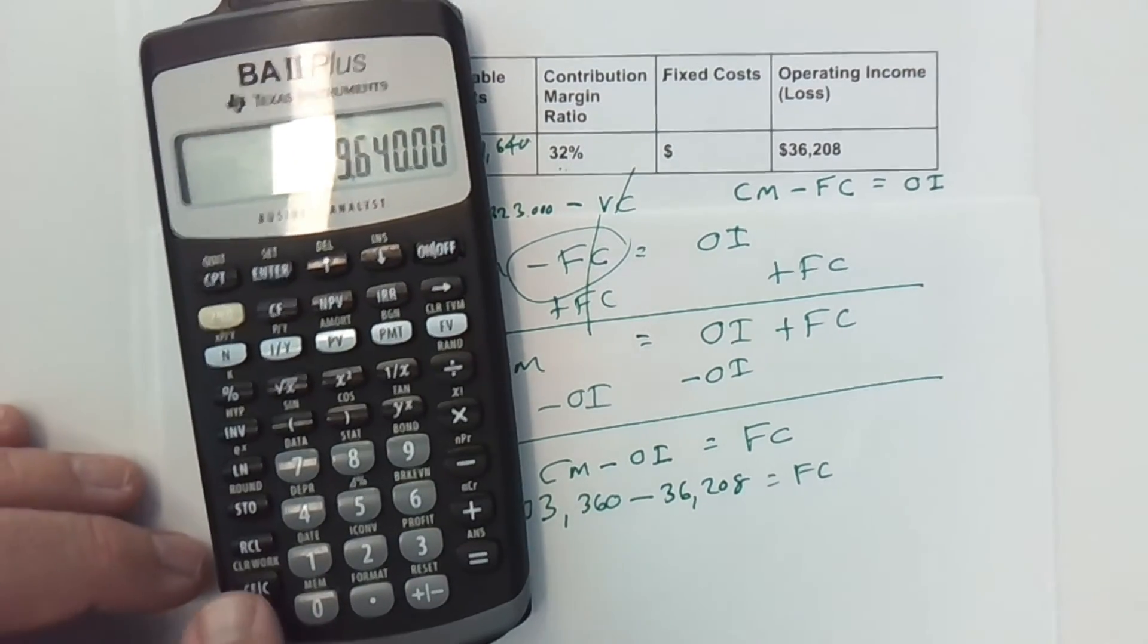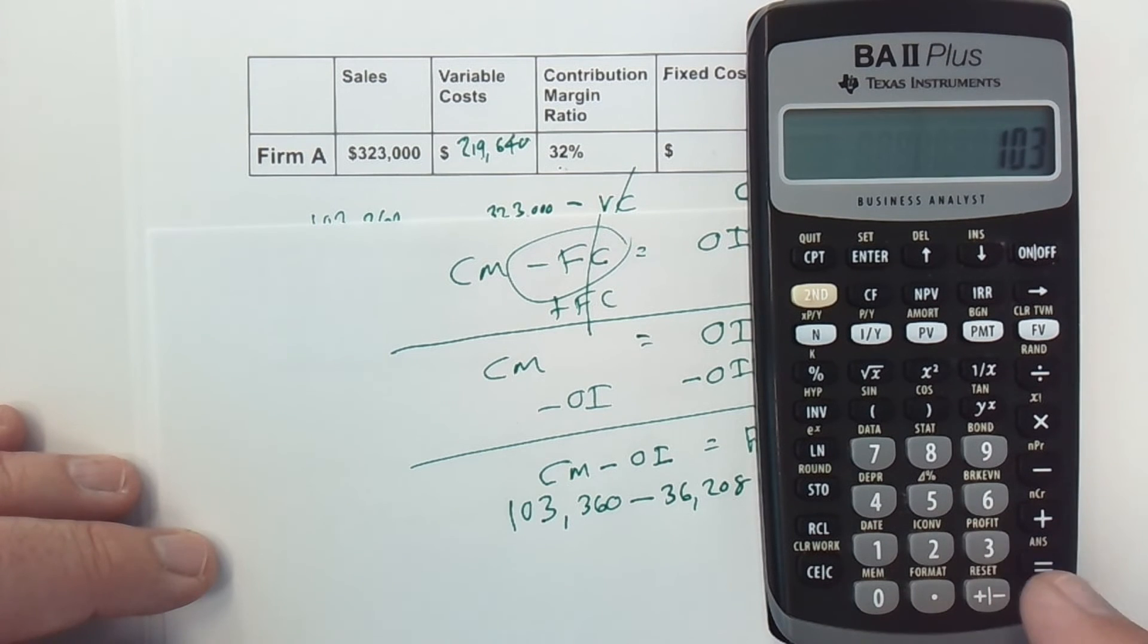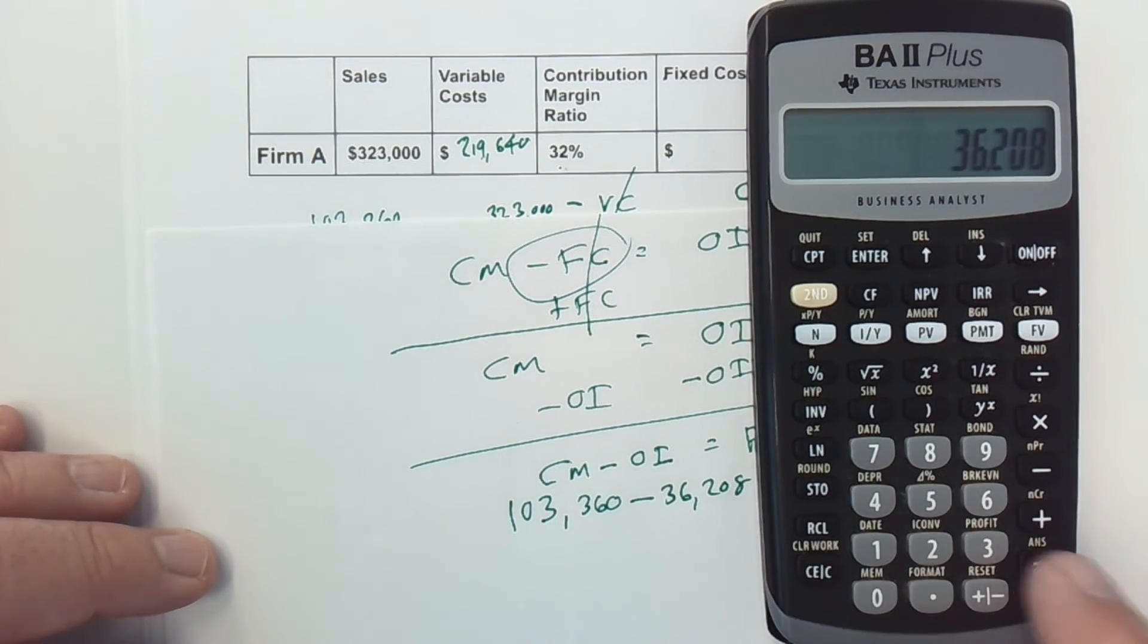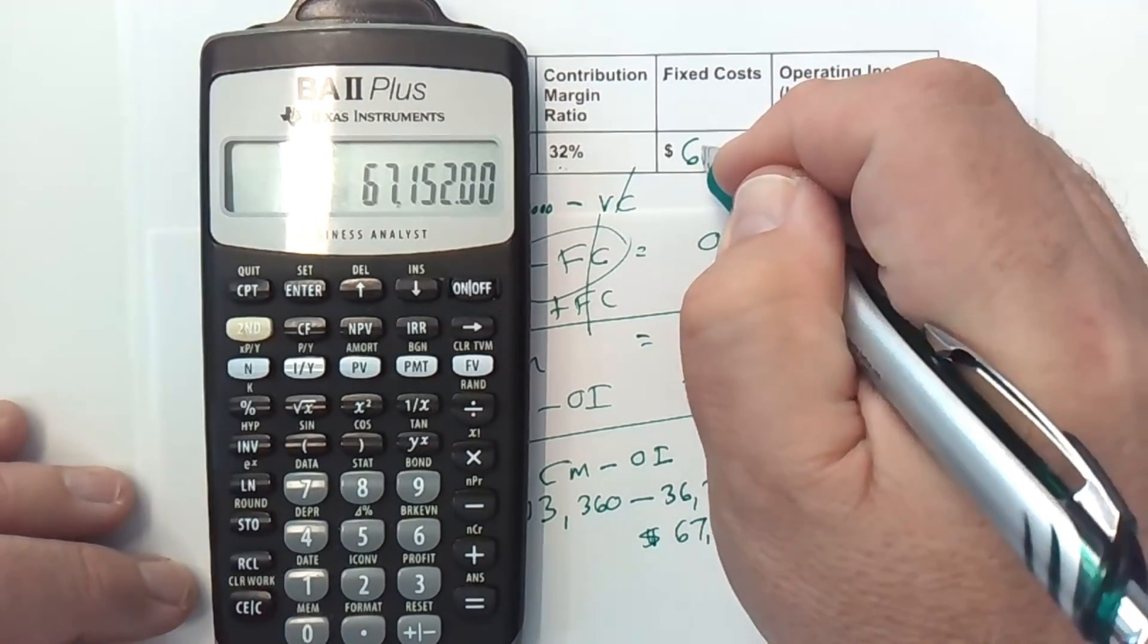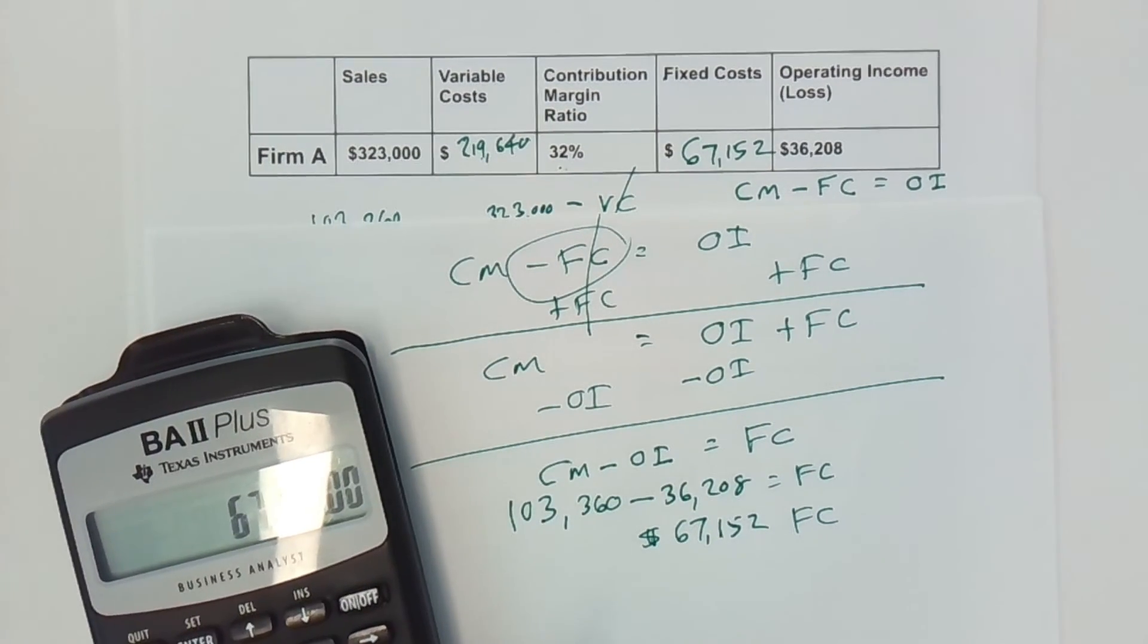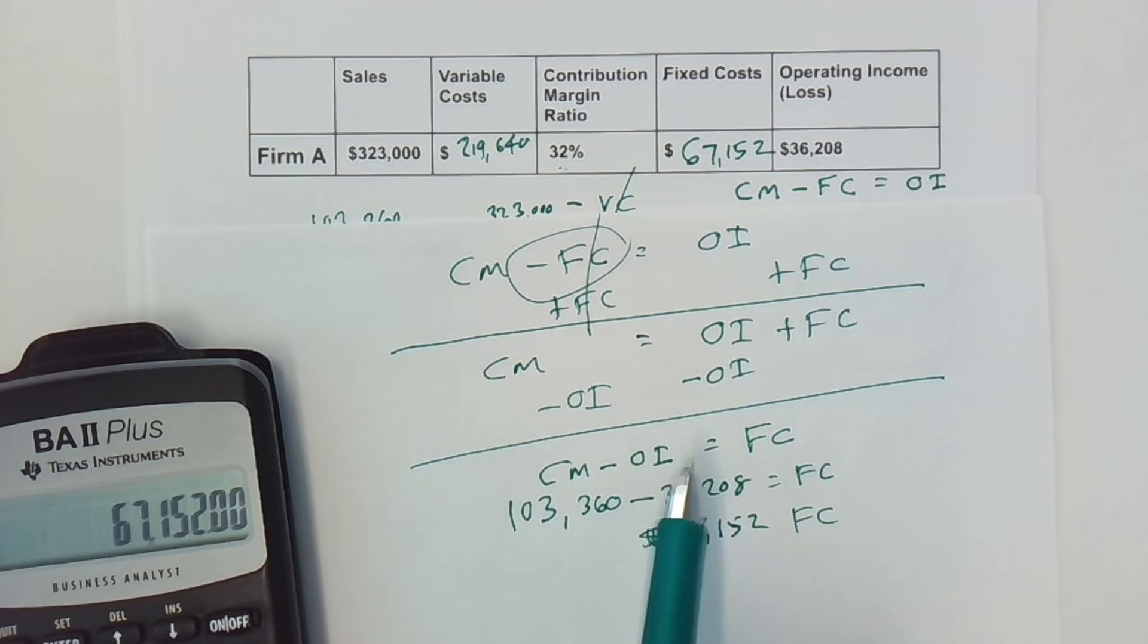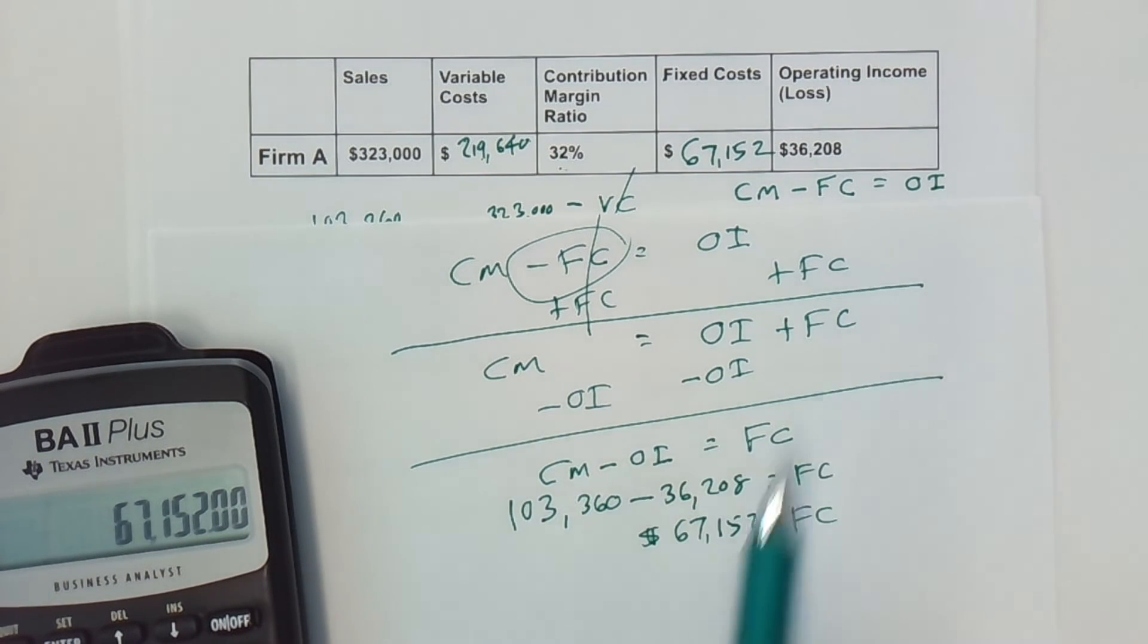That's going to equal our fixed costs. Let's go ahead and pull out the calculator again. I'm going to put in $103,360 and subtract from that the operating income, $36,208. And that gives us a fixed cost of $67,152. So I'm going to write that in, $67,152. That is how you find the variable cost and the fixed costs when you're just given the sales, the contribution margin ratio, and the operating income.